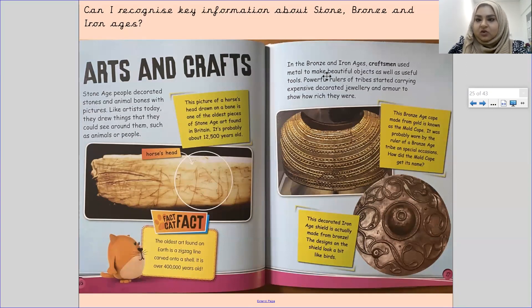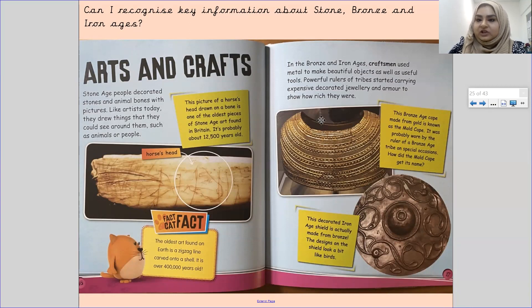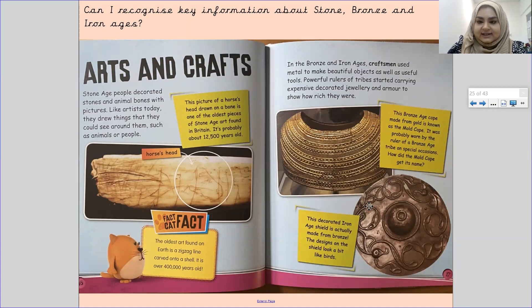In the Bronze and Iron Ages, craftsmen used metal to make beautiful objects as well as useful tools. Powerful rulers of tribes started carrying expensive decorated jewellery and armour to show how rich they were. This Bronze Age cape made from gold is known as the Mould Cape — it was probably worn by the ruler of a Bronze Age tribe on special occasions. This decorated iron shield is actually made from bronze, and the designs on the shield look a bit like birds.